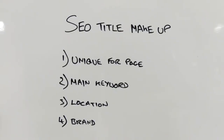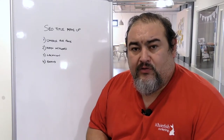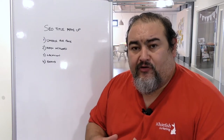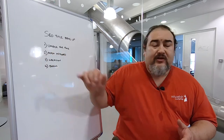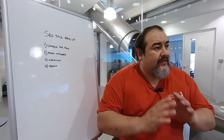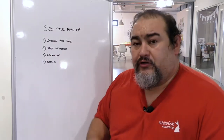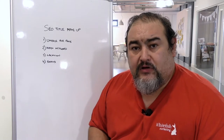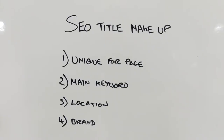The second thing is adding in your main keyword. Try to add in your core keyword for the page wherever possible. If you've only got space for your unique description and your main keyword, then keep it as that. If you've got space, then look to put in your location — location is great for localized SEO. And lastly, if you have got space again, put in your brand as well.